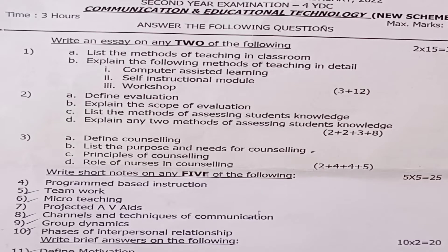In the essay questions, out of any three you have to answer 2; 2 into 15 equals 30 marks. Question 1a: list the methods of teaching in classroom, for 3 marks. Question 1b: explain the following methods of teaching — computer assisted learning, self-instructional module, and workshop — each carries 4 marks, totalling 12 marks. Second question has parts a, b, c, d: 2a carries 2 marks, 2b carries 2 marks, 2c carries 3 marks, and 2d carries 8 marks. Question 2a: define evaluation.